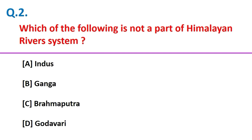Which of the following is not a part of the Himalayan river system? Godavari.